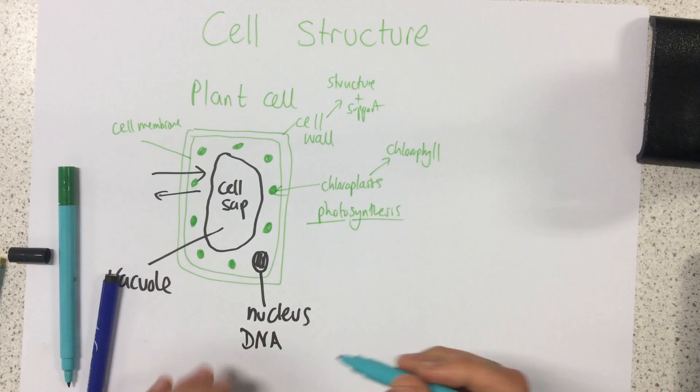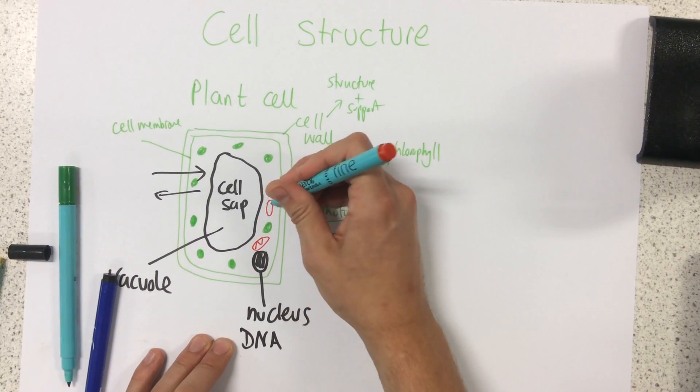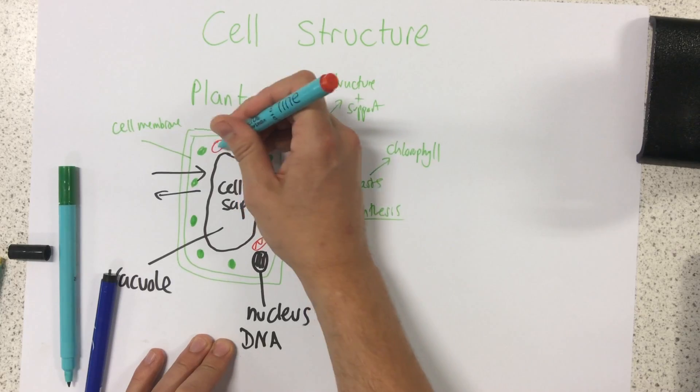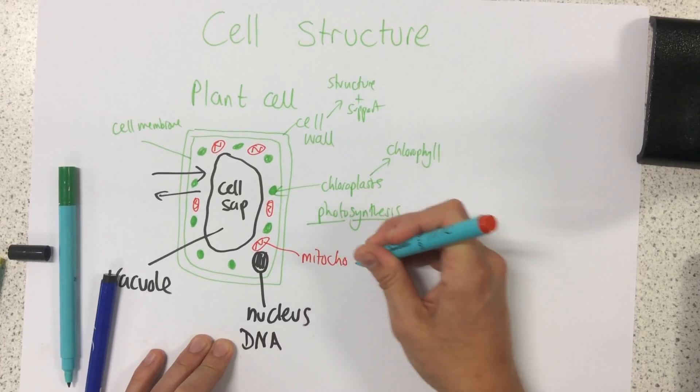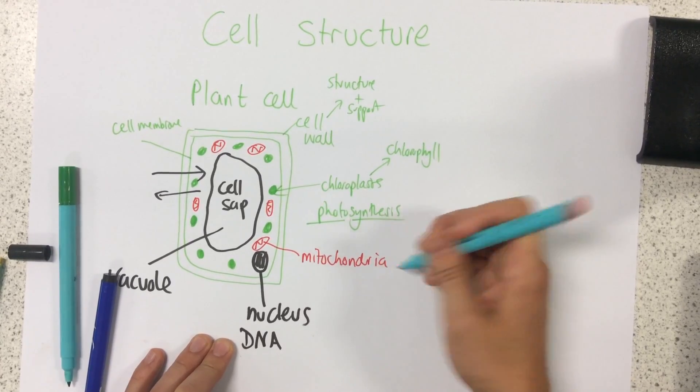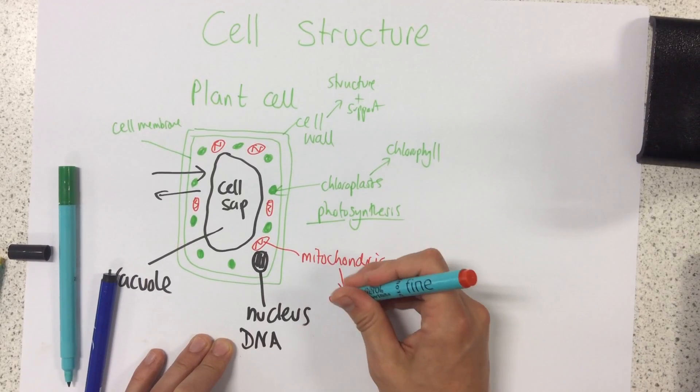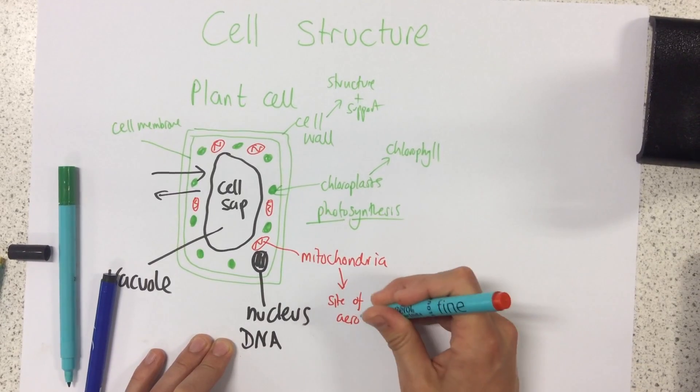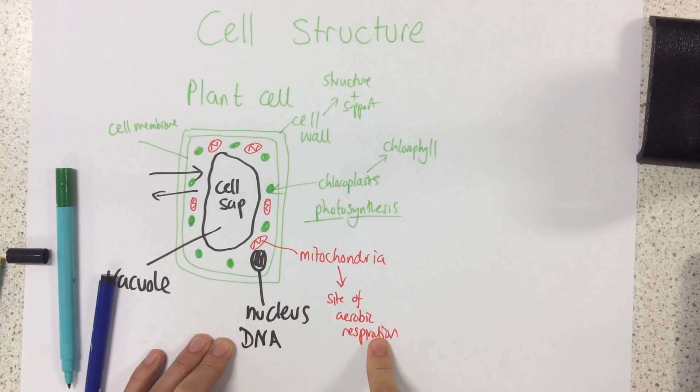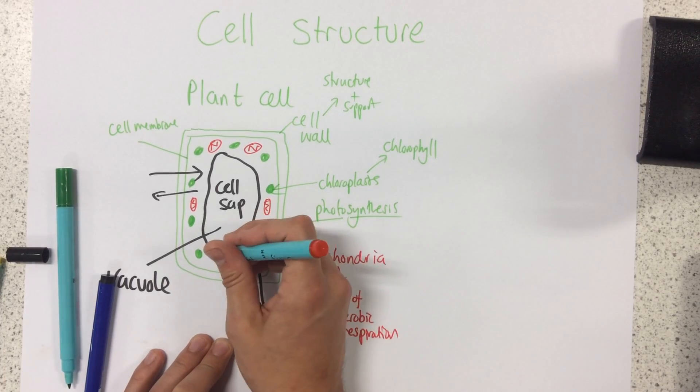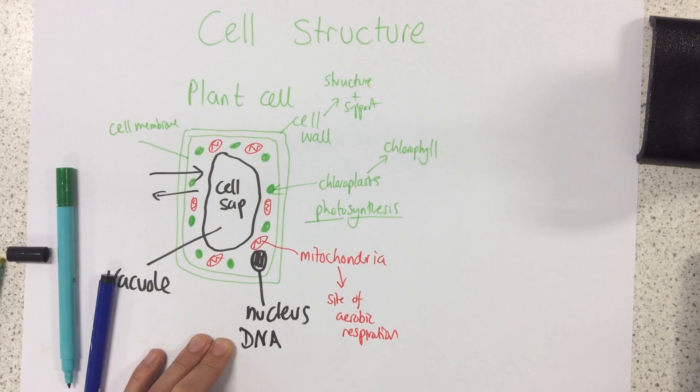Next up we have these structures called mitochondria. Difficult word to spell. In mitochondria is the site of aerobic respiration. Aerobic respiration is a way that we release energy from glucose also using oxygen. The word aerobic means with oxygen. So all of these mitochondria throughout our cell provides energy for the cell to do all of its processes that it needs to do.